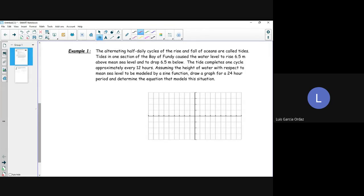So we have the alternating half daily cycles of the rise and fall of the oceans are called tides. Tides in one section of the Bay of Fundy caused the water level to rise 6 meters above mean sea level and drop 6 meters below sea level. The tide completes one cycle every 12 hours.